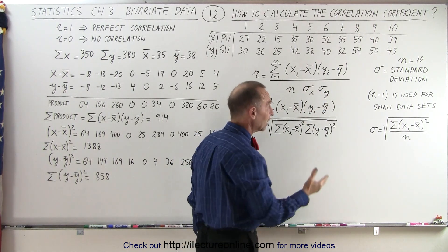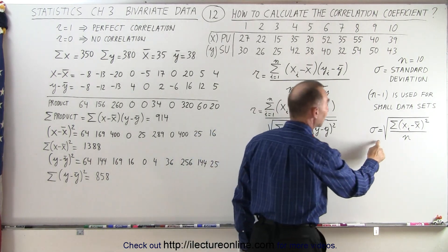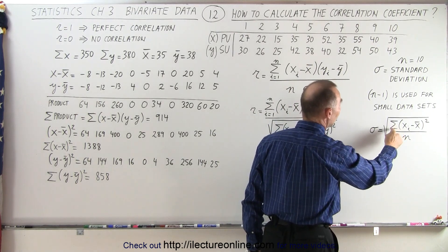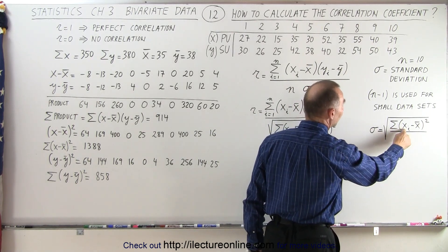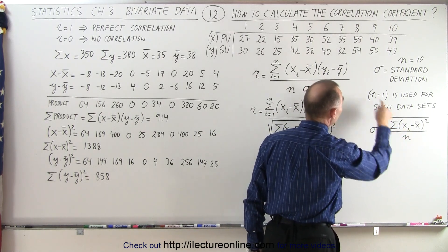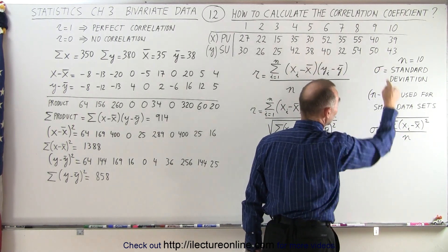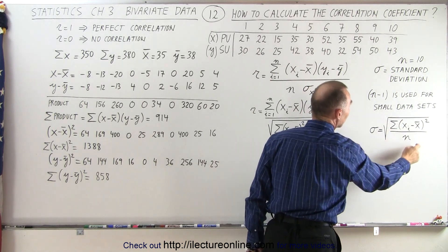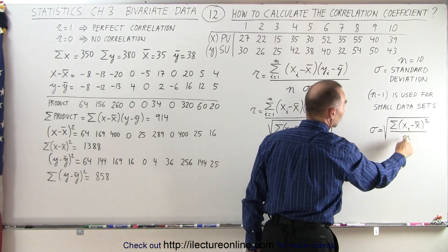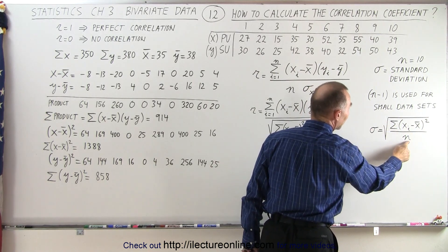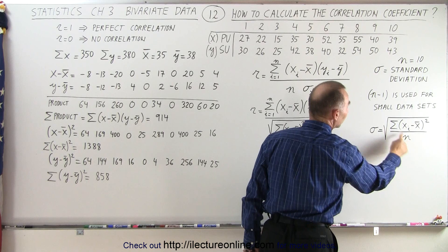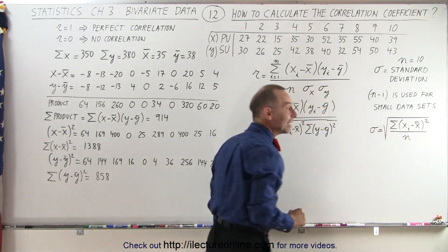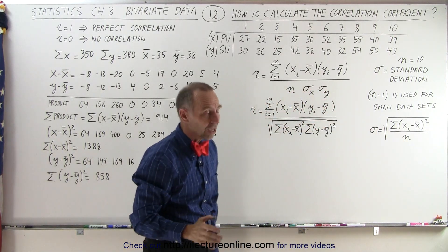The standard deviation can be calculated by taking the sum of the difference between each of the values minus the average, quantity squared. When you sum all those up, divide by the number of data points, and take the square root — that's the standard deviation.